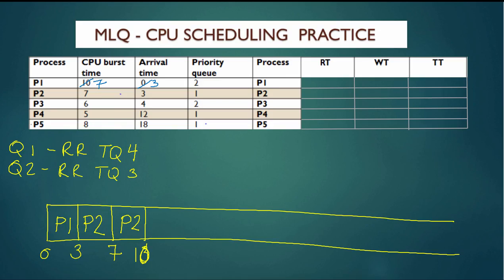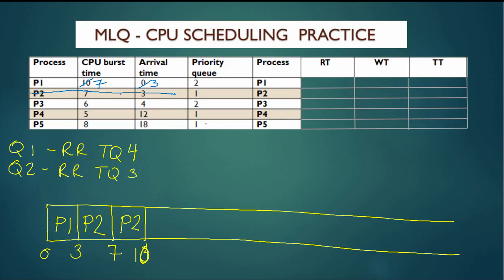P2 is done at time 10. Now the current time is 10, and in our ready queue we have P1 (Q2) and P3 (Q2). Both P4 and P5 have not arrived yet. To decide which one goes next, we have two processes at the same priority, so we use first-come-first-serve to break the tie, and P1 will go first.